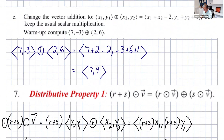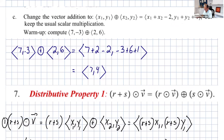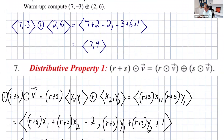Let's try part (c): change the vector addition so that (x1, y1) plus (x2, y2) is given by (x1 + x2 - 2, y1 + y2 + 1). Let's try it with (7, -3) plus (2, 6). Following the operation: the first component is 7 + 2 - 2 = 7, and the second component is -3 + 6 + 1 = 4. So we get (7, 4). The answer says that distributive property 1 is violated — let's see how.